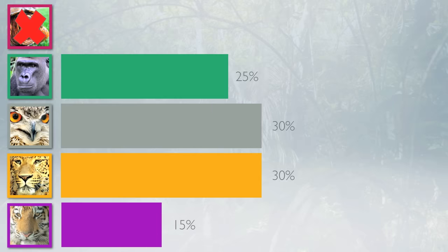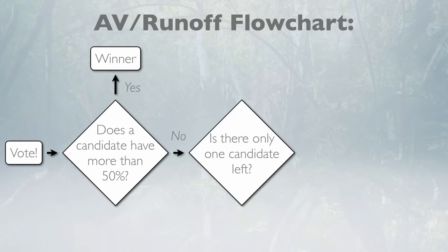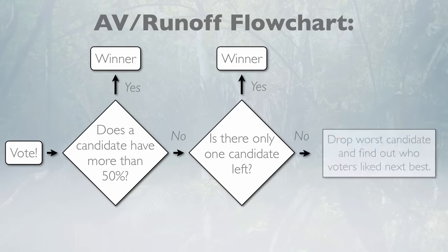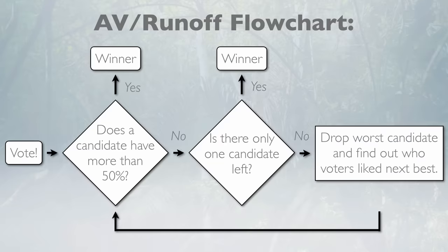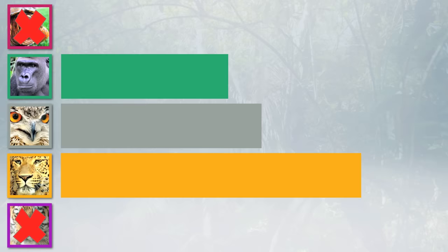This is why the alternative vote is sometimes called instant runoff voting. It simulates a series of elections where the least popular candidate is eliminated after each round, without the time and expense of running multiple campaigns. The alternative vote keeps eliminating the least popular candidate until someone wins a majority or only one is left. As no one has a majority yet, the next lowest candidate, Tiger, is eliminated. Tiger voters listed Leopard as their second choice, so she gets Tiger's votes. In the last round, Gorilla is eliminated. Gorilla voters listed Owl as their second choice, so Owl gets those votes, wins a majority, and is crowned king.